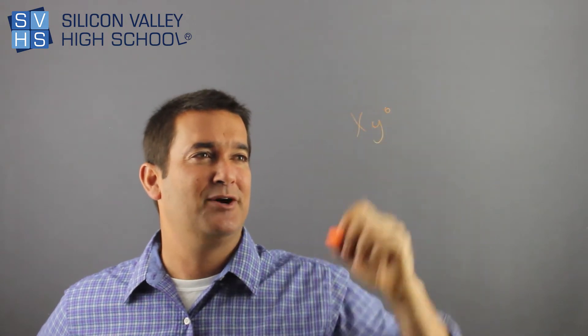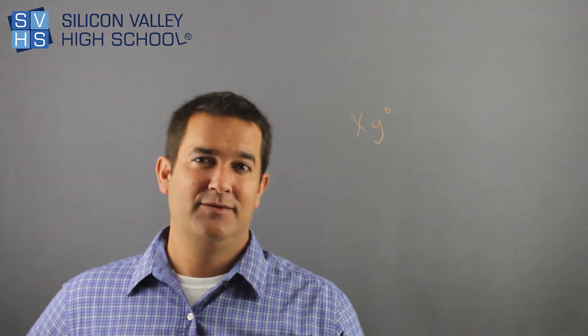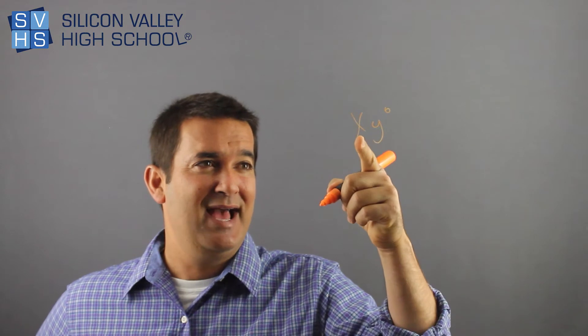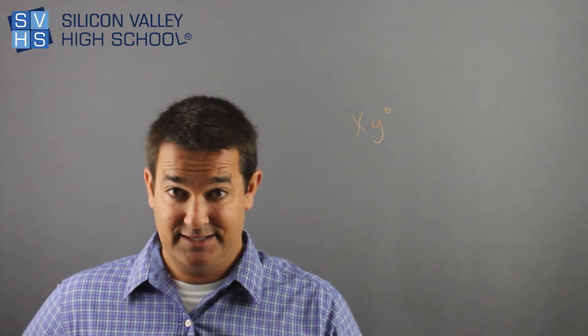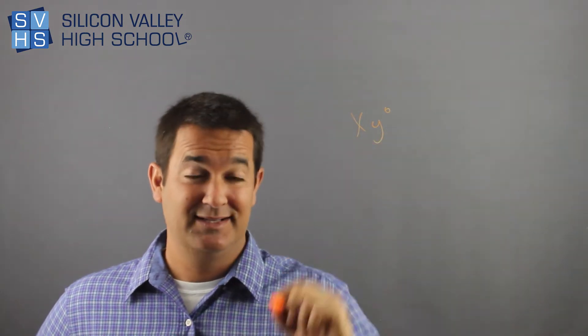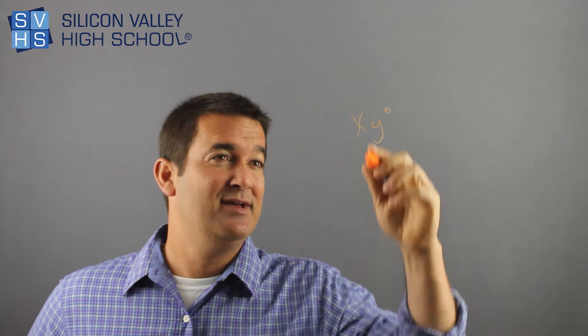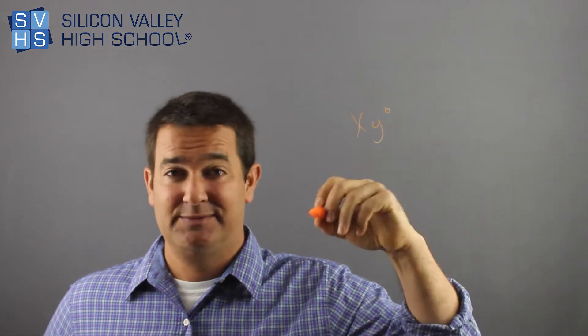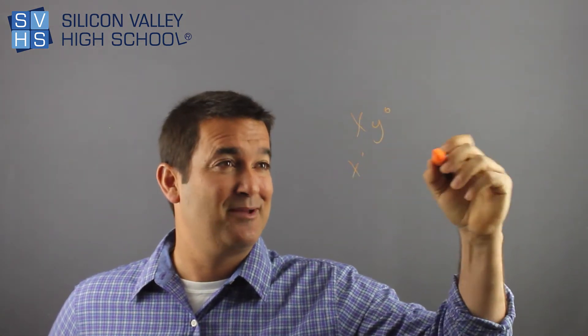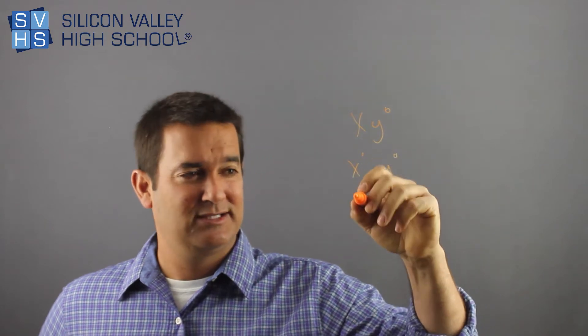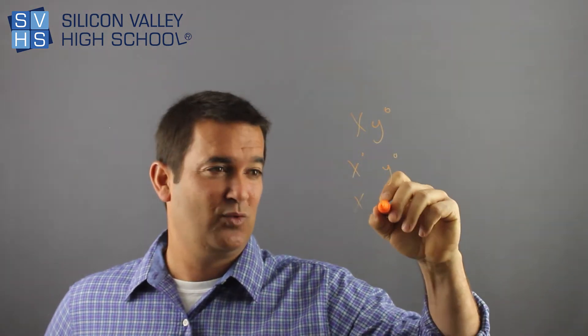Be careful — what if they're not attached? Like x times y to the zero. In this case, the answer is not one, because the x is not to the zero — the y is. You have to be careful about parentheses and stuff. This would actually be x to the one times y to the zero. X to the one is x, and y to the zero is one. So you have to make sure that everything is being raised to the zero, and if it's not, you've got to treat them separately.